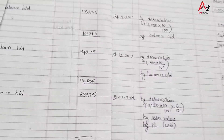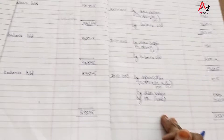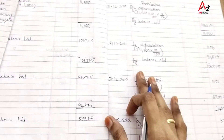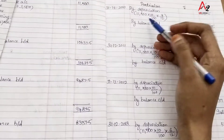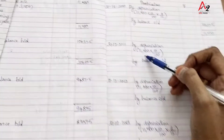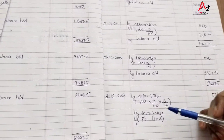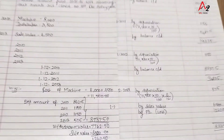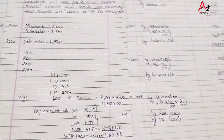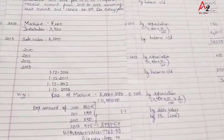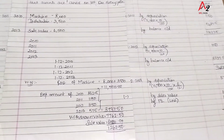Proof: the balance of 8,337.5 is verified — 575 plus 6,500 plus 1,262.50 equals 8,337.5. The balances match. That's all for this straight-line method problem — every year the same amount of depreciation is charged. Subscribe for more videos.